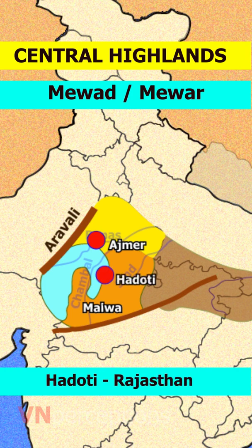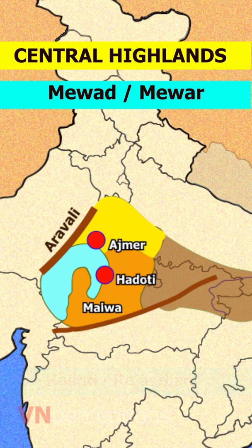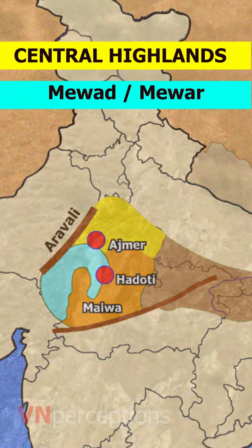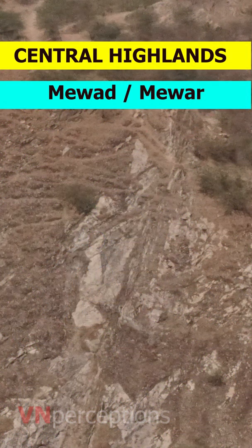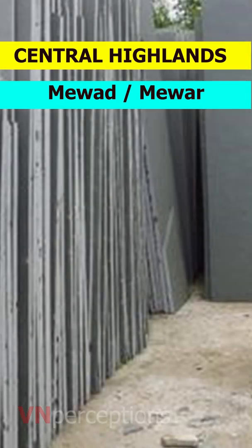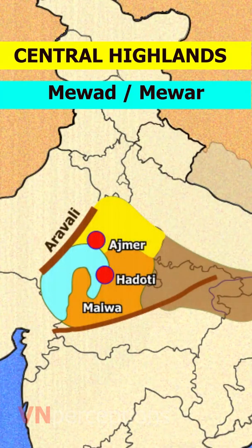The northern and eastern portions of Mewar are made up of an elevated plateau, while the western and southern portions are rocky and hilly with dense forest. The Aravalli Range, which forms the northwestern boundary of the region, is composed mostly of sedimentary rocks like marble and cotta stone, which has traditionally been an important construction material.